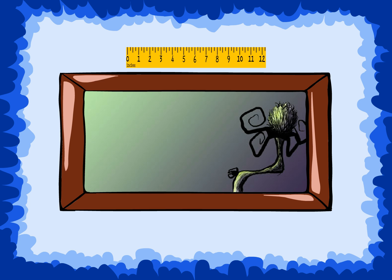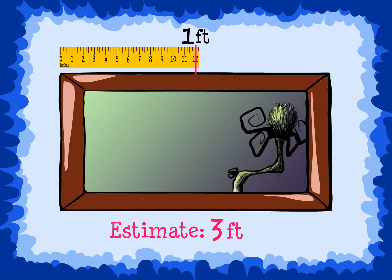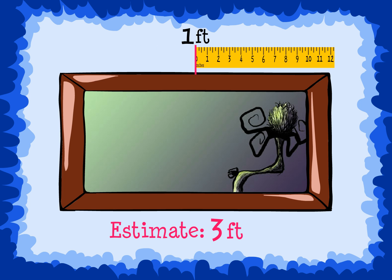Here is a foot and here is a picture frame. Can you estimate how many feet long the frame is? I would estimate the frame is about 3 feet long. When measuring with a ruler, we need to place the ruler at the edge of the object, mark the place where the ruler ends, and then place the end of the ruler at the mark we made. We estimated that the picture frame would be about 3 feet, but the actual length is 2 feet long.